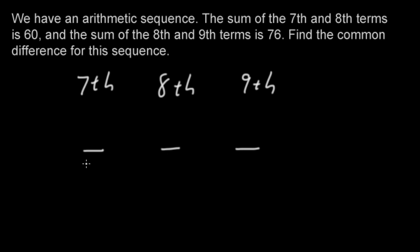So the sum of the 7th and 8th term is 60, and the sum of the 8th and 9th terms is 76. By looking at this, it seems that the 8th term is more important than the other two terms, because the 8th term is involved in both relationships, the 60 and the 76. And the difference between the 7th and 8th terms is D, and the difference between 8th and 9th term is also D.